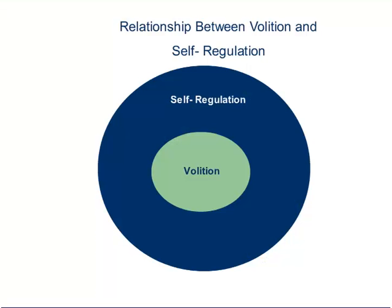In conclusion, self-regulation and volition are two elements of motivation, where volition requires the learner to be able to focus despite distractions. If one has volition, they are self-regulated, but self-regulation does not necessarily give one volition.